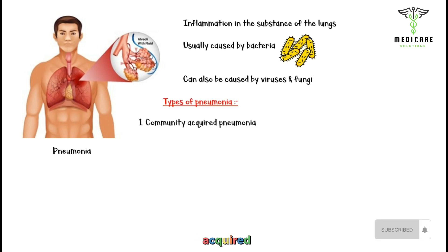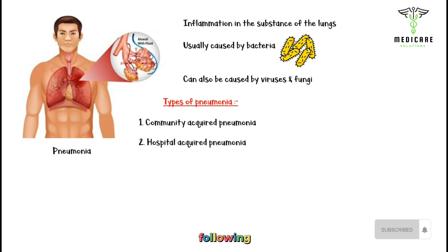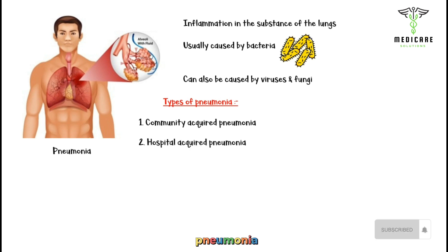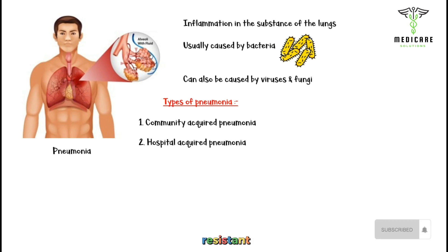Community-acquired pneumonia is the commonest type and is acquired through the community. Hospital-acquired pneumonia occurs following a hospital stay for some other condition. This type can be quite nasty because bacterial strains causing hospital-acquired pneumonia are highly resistant to usual antibiotics.